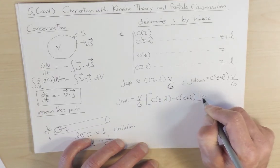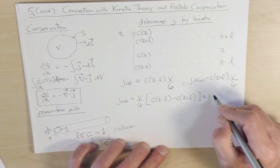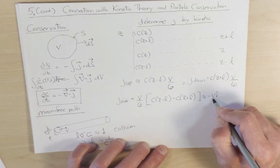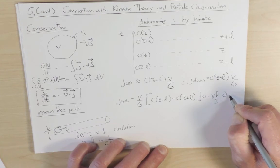And so this is doing a first-order Taylor expansion, minus v l over three, dc by dz.